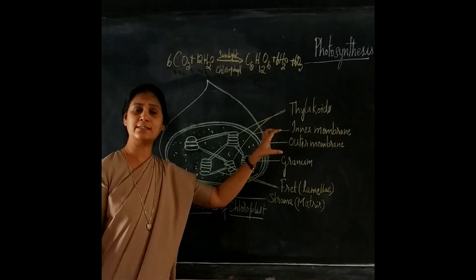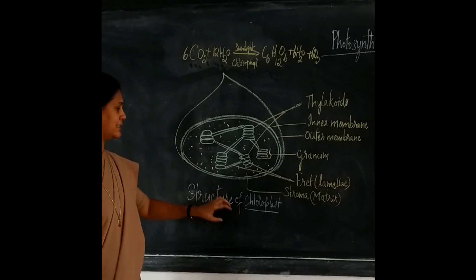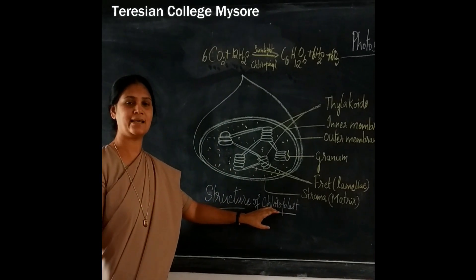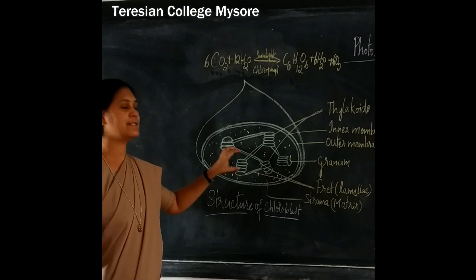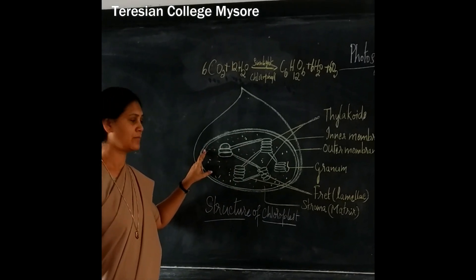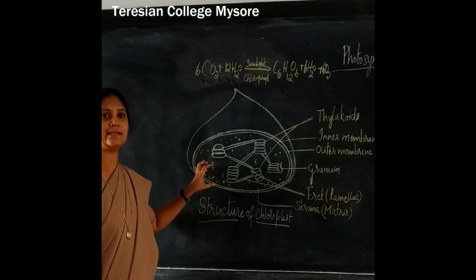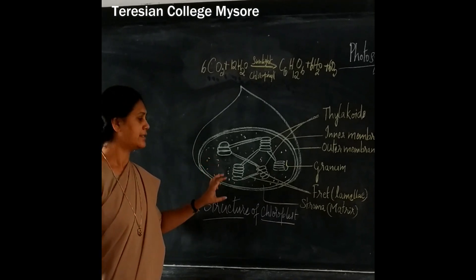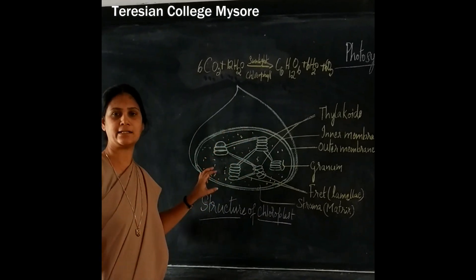Photosynthesis basically occurs in the chloroplast. The chloroplast is the cell organelle which is embedded into the plant cell. The plant cell has cytoplasm. In the cytoplasm, the number of chloroplasts are scattered.